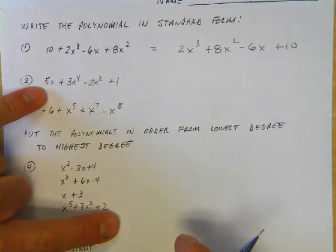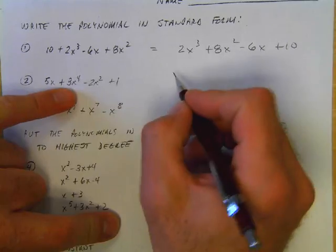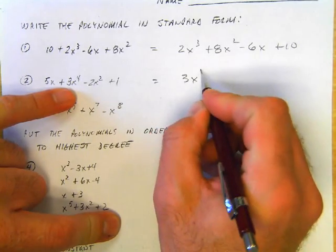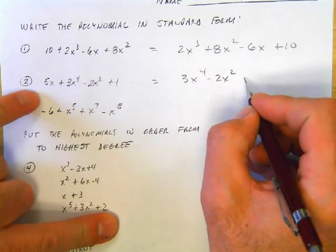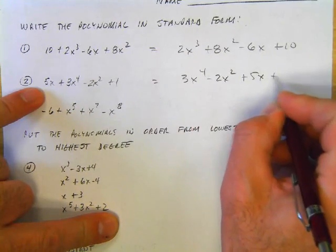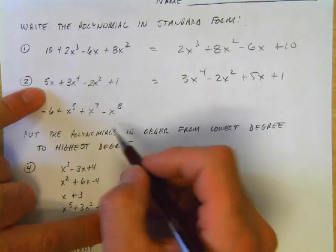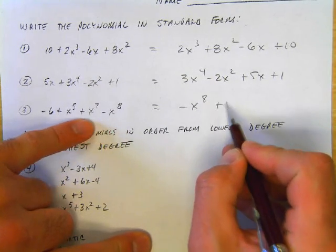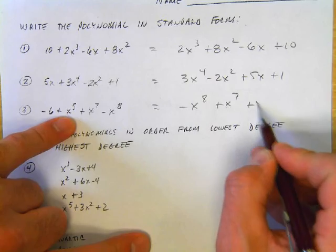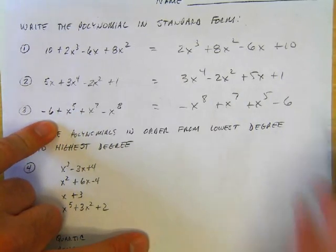So this will be 2x³ + 8x² - 6x + 10. The next one, the largest exponent is the 4. So 3x to the 4th, then the x², minus 2x² plus 5x plus 1. And lastly, the largest exponent: -x⁸ + x⁷ + x⁵ - 6.